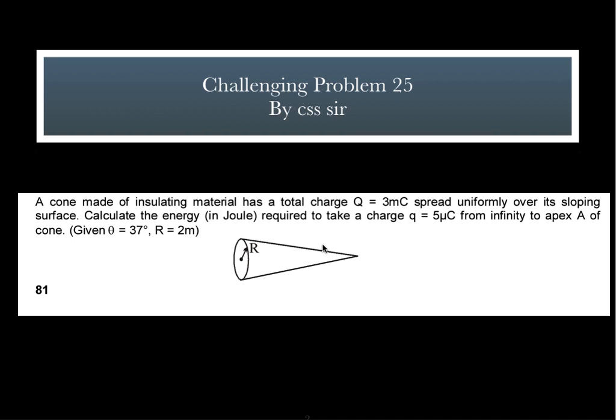The next problem is another interesting problem from electrostatics. I am choosing different topics so that you can have a flavor of the entire JEE syllabus. How many sets of problems I will give depends on your response. If you guys are responding in proper way, I will definitely come up with more problems. A cone made of insulating material has a total charge Q equal to 3 millicoulomb spread uniformly over its sloping surface. Calculate the energy required to take a charge Q, 5 microcoulomb from infinity to apex A of the cone. Theta is given to you. You are supposed to bring a charge from infinity to apex A. In short, you want to calculate potential energy of this point charge at this apex. I can give you some hint. You have to consider an elementary ring here on the surface and then calculate potential and then integrate.